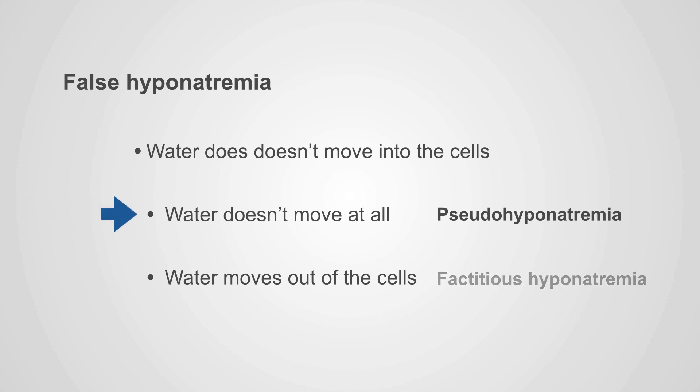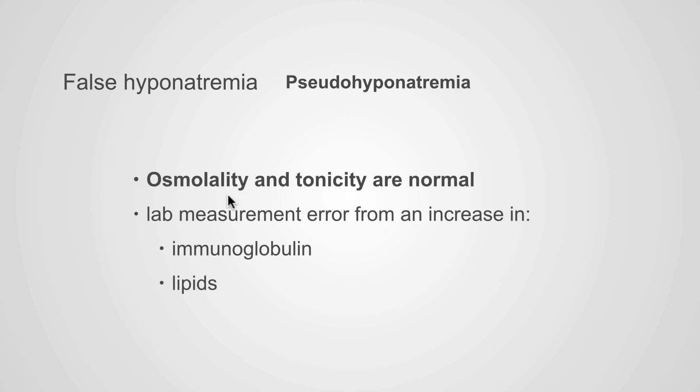In pseudohyponatremia, the osmolality and tonicity are normal, and the reason you get hyponatremia on the lab is just a lab measurement error. This is a problem with the instrument used to measure sodium that fails in a specific clinical scenario — when there are an unexpectedly high number of immunoglobulins, or an unexpectedly high amount of lipids.